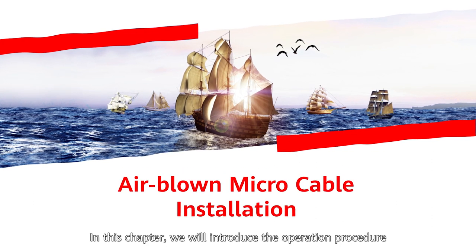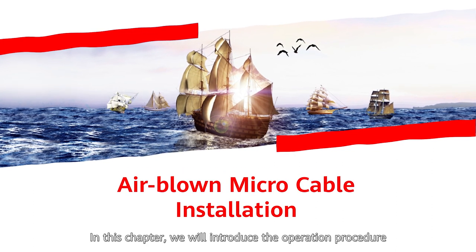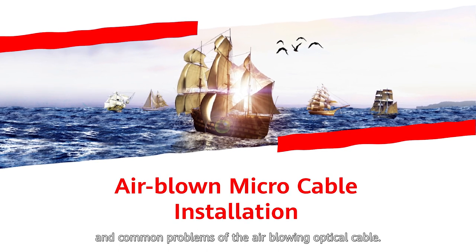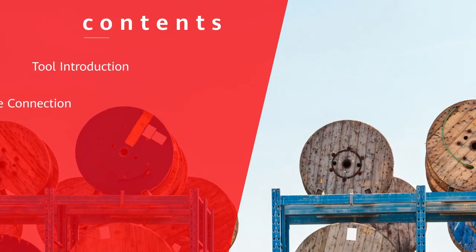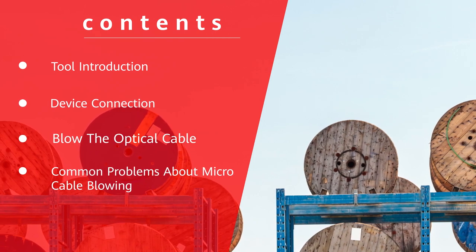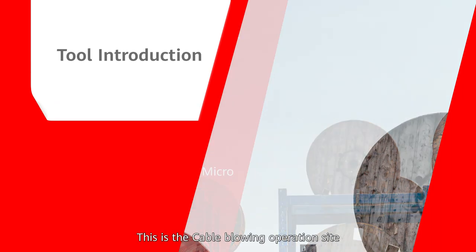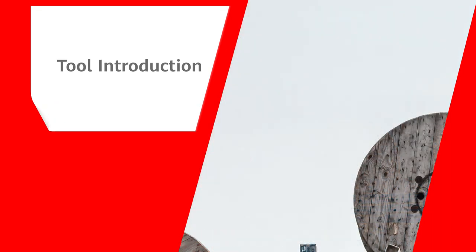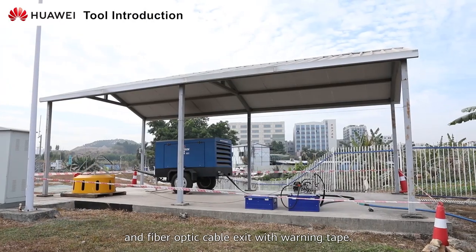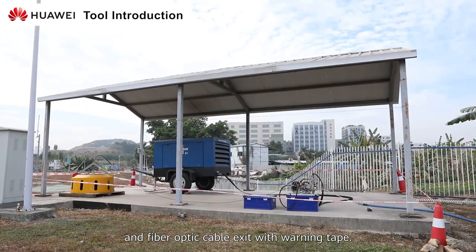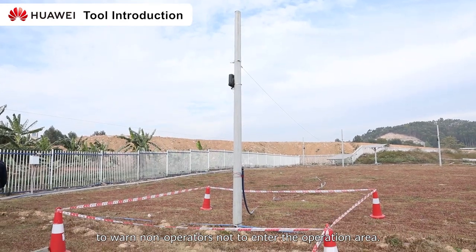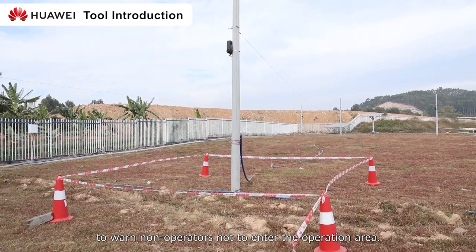In this chapter we will introduce the operational procedure and common problems of the air blowing optical cable. This is the cable blowing operation site. Enclose the air compressor, cable reel drive, and fiber optic cable exit with warning tape to warn non-operators not to enter the operational area.